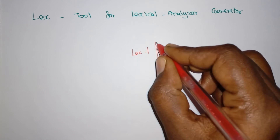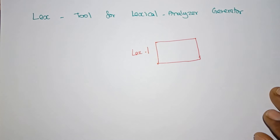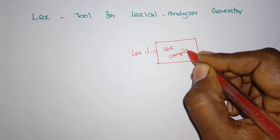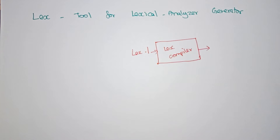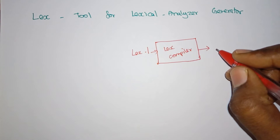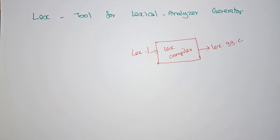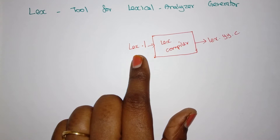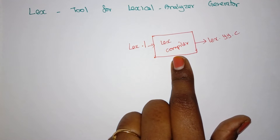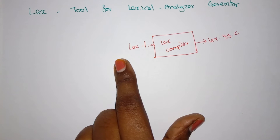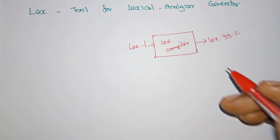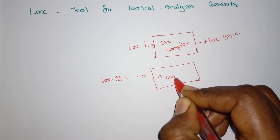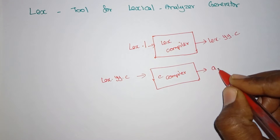The '.l' extension represents a lexical program. Like any program, the lexical program also needs to be compiled. We pass it to the LEX compiler, which internally uses a C compiler for execution. The LEX compiler generates a file with the structure 'lex.yy.c'. So a LEX program containing all the rules written in the lexical language is fed to the LEX compiler, which converts the '.l' code into a '.c' C program.